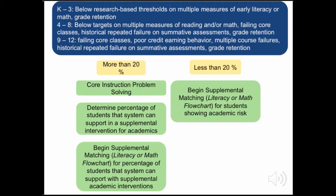If the percentage of students demonstrating academic risk is less than 20% of a grade or school, then we can begin matching those students to supplemental interventions. The remainder of module 2.3 will focus on the specific math supplemental strategies appropriate for students at each level. If the percentage is more than 20%, it is recommended to engage in core problem solving before determining the percentage of students a supplemental intervention system can support. Your NCMTSS team has provided an intervention resource planning tool in modules 2.1, 2.2, and 2.3 to assist teams in determining the resources needed to support supplemental and intensive interventions.